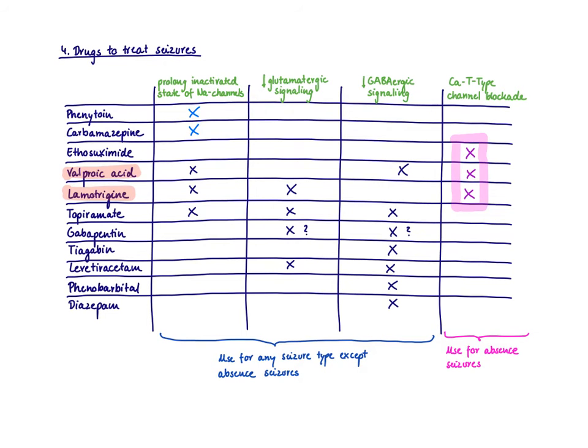So here you can see a list with drugs to treat seizure disorders. And there are many more. These are just major examples. And here I have listed the predictable mechanism of actions that we just said in the previous slide. And what you can see here is that most of the drugs have a lot of different mechanisms of action. They do more than one thing.